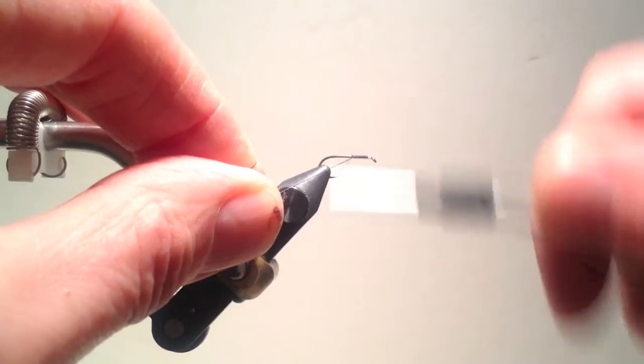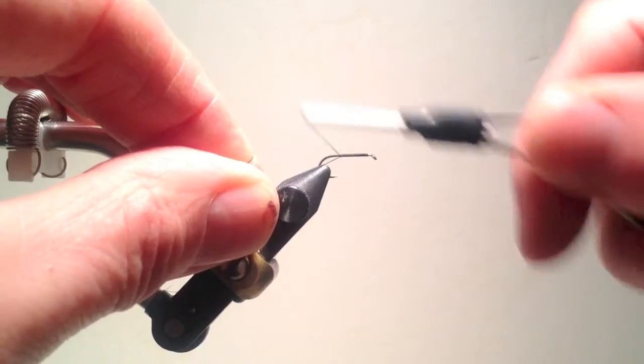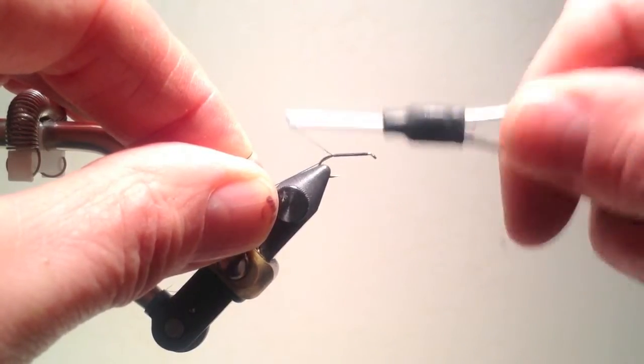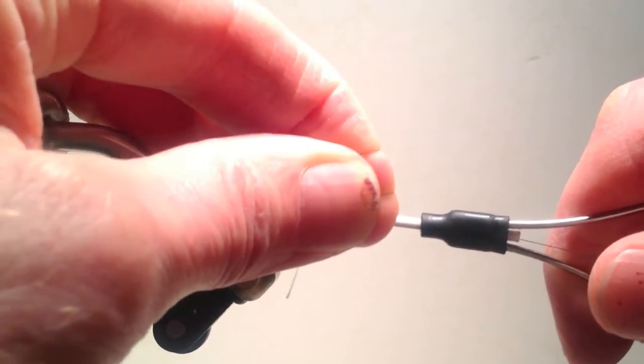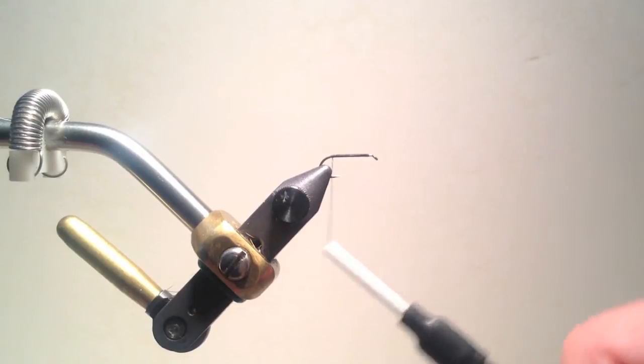Using tension on the tail of the thread, holding it at approximately 45 degrees, allows me to lay down a nice smooth thread base before breaking the thread off parallel to the hook shank.